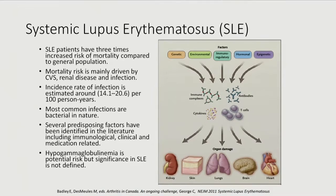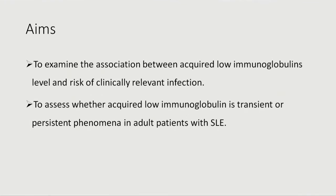The infection rate is not that high, and this is a problem when you do any study in a rare disease. So, in order to study this further, our aim was to examine the association between acquired low immunoglobulin — which could be an immunological risk predisposition to infection — and the outcome of interest is clinically relevant infection. We also want to assess whether acquired low immunoglobulin is a transient phenomenon in patients with lupus and whether they recover over time.